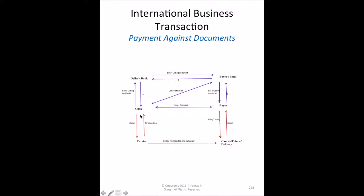Normally, the seller presents the bill of lading to the buyer for payment, or if a letter of credit is involved, to the buyer's bank, or if there's a confirmed LC, to the seller's bank which then presents it to the buyer's bank. Assuming a complying presentation each time, each party has an obligation to pay. A complying presentation means all documents specified in the letter of credit must be presented, and the bill of lading is one of those.